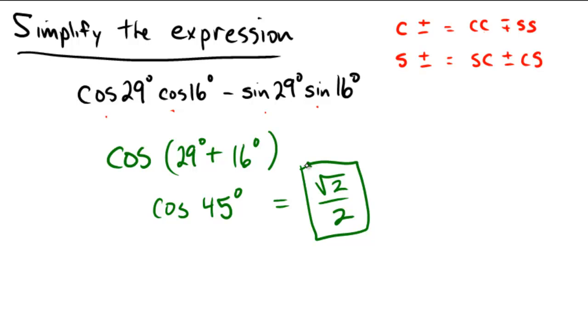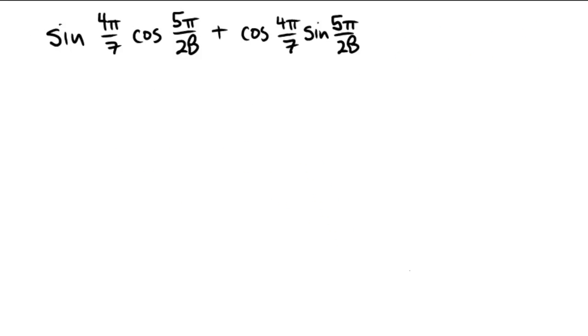Why don't you pause the video and see if you can do this one on your own? Try doing the sine of 4π/7 cosine of 5π/28 plus cosine 4π/7 sine of 5π/28. Recalling those formulas, this one's a sin cos plus a cos sin, so this one is going to end up being a sine.